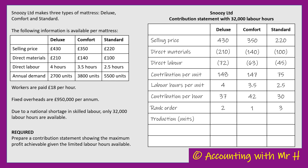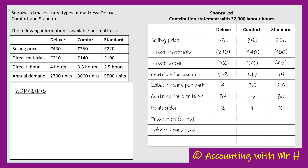I'm going to have two more rows: production in units, and a record of the labour hours being used. We know there are 32,000 labour hours available, and we've ranked Comfort first so we're going to start by making the Comfort.